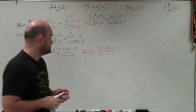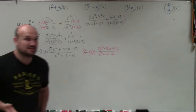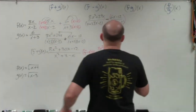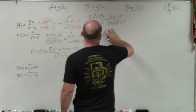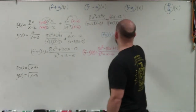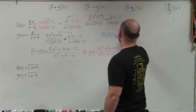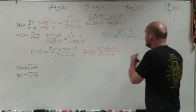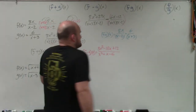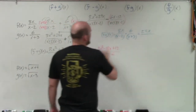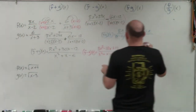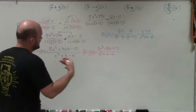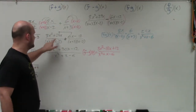Now let's look at multiplication. When multiplying fractions, you simply multiply numerator times numerator and denominator times denominator. So 8x over x minus 2 times 6 over x plus 3. Eight x times 6 is 48x, and x minus 2 times x plus 3 we already know is x squared plus x minus 6. The domain for all these operations would be all real numbers except x cannot equal negative 3 or positive 2.